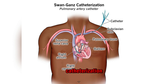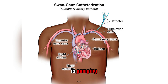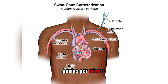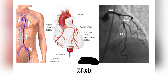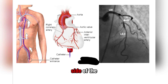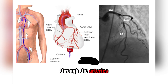4. Right Heart Catheterization: A thin tube is inserted into a vein and advanced to the heart. The test measures how much blood the heart pumps per minute and how much oxygen is in the blood in each heart chamber. It is also called a pulmonary artery catheter. 5. Left Heart Catheterization: Similar to right heart catheterization, but done on the left side of the heart. 6. Coronary Angiography: Dye is injected into the bloodstream to highlight how blood flows through the arteries and whether there are blockages or abnormal passages.